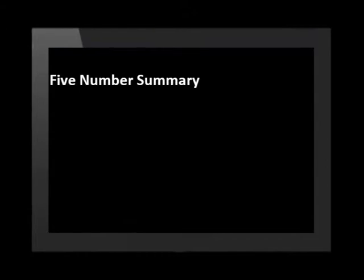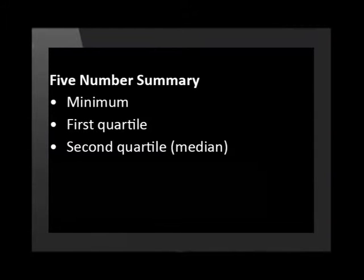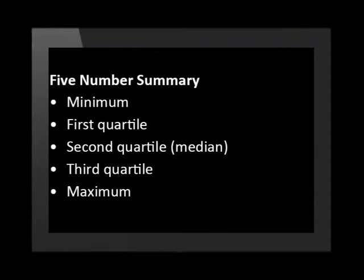Eloise has used five important numbers to plot this box and whisker plot. We call this the five number summary. The five number summary includes the minimum value, the first quartile value, the second quartile value which is also known as the median, the third quartile value, and the maximum value. Let's go back to Gerard, Segra, and Eloise as they work with this more.